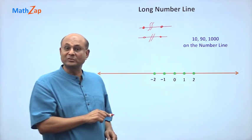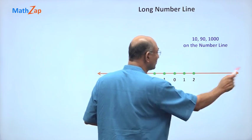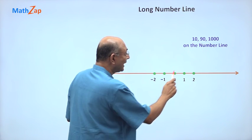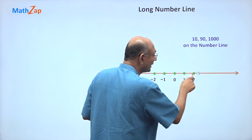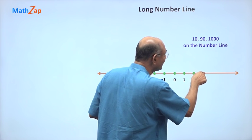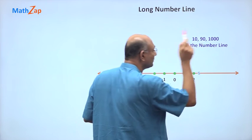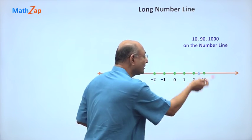So let us use that idea to plot 10, 90, and 1000 on this number line. So after 2, I am going to put a break. So I don't know how many points are there after this. But after some time, you will get 10. 10 is to the right of 2.